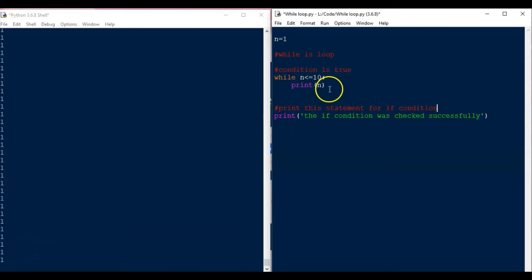The condition is true, so it will print the count again. Then, it will go back to the while statement again, check the condition again and print the value again. Like this, it will continue printing the value of n again and again. That is why it did not print this statement saying that the if condition was checked successfully at all, because it is still going in a loop here.